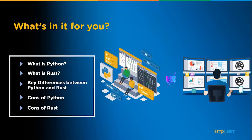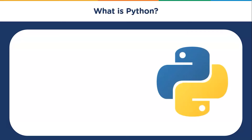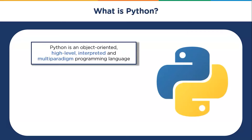I'm Abhisar Oja from Simply Learn and welcome to this video on Python versus Rust. Let's start with the introduction to Python. Python is an object-oriented, high-level, interpreted and multi-paradigm programming language.